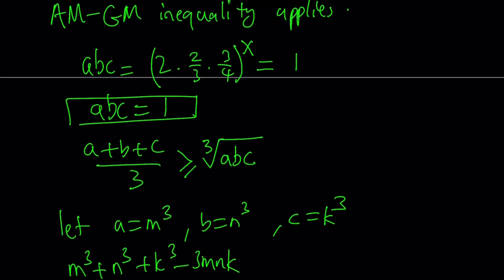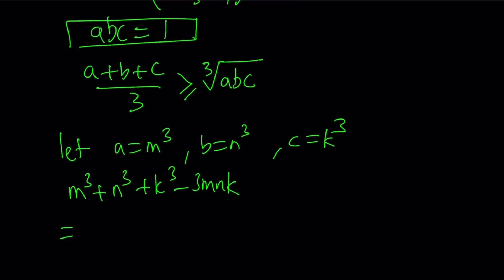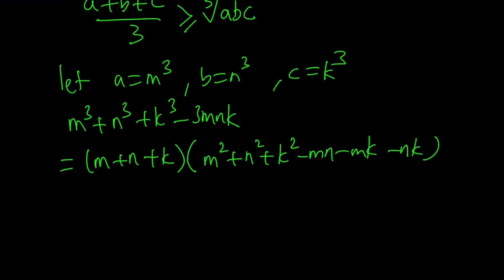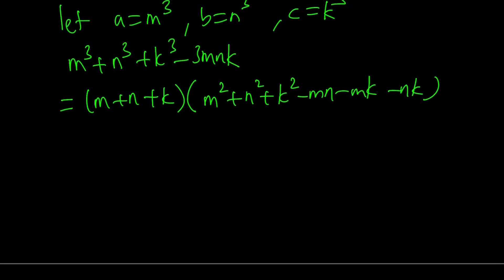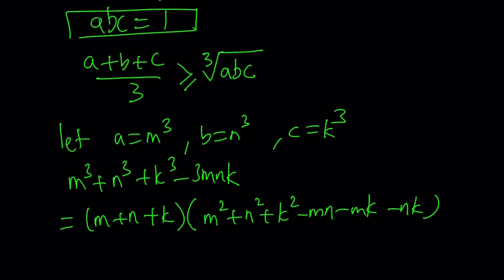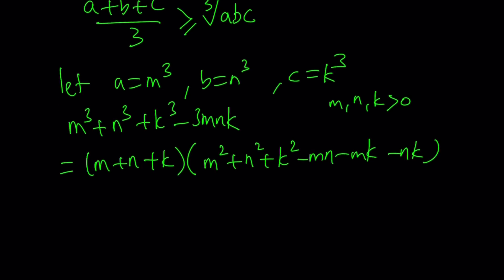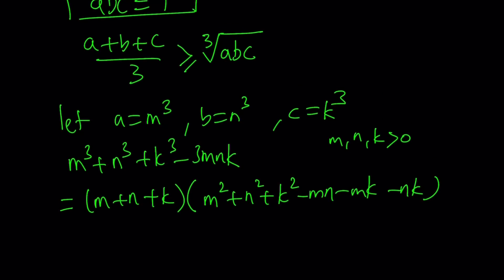If you've seen some other videos that I made, you'll probably remember that this polynomial is divisible by M plus N plus K. And the other factor is M squared plus N squared plus K squared minus MN minus MK minus NK. Now I'm going to go ahead and focus on the second expression here. Obviously, since ABC are all positive, M, N, and K are also going to be positive because they're just going to be cube roots of these numbers.